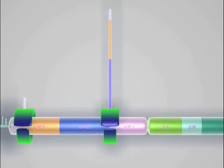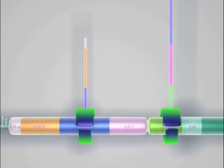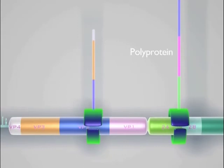Each ribosome translates the open reading frame of the genome in one long pass, producing a polyprotein. This polyprotein must be cleaved into its individual components for replication to start.